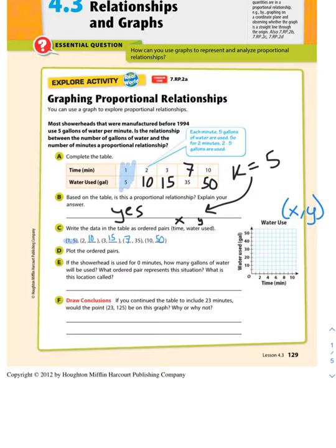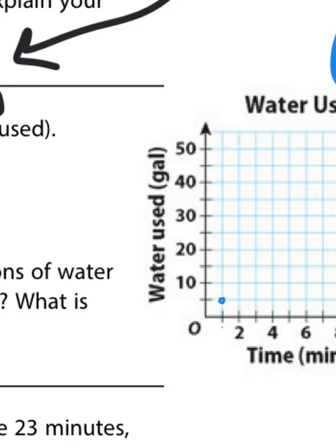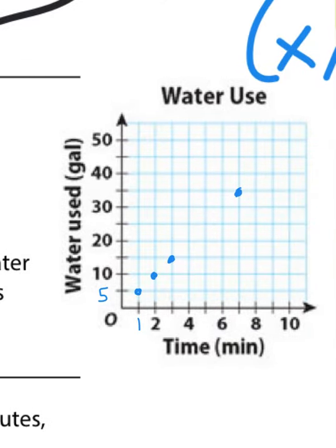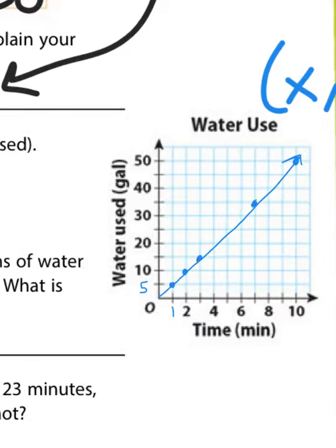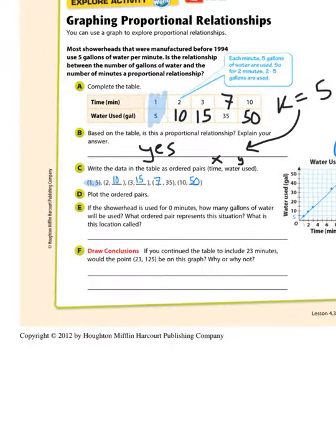So 1, 5 is going to be right here, over 1, up 5. Next one was at 2, 10, then we add 3, 15, 7, 35, and 10, 50. Let's connect those dots. Notice how a proportional relationship is graphed with a straight line. Because it's linear, we'll learn what that word means later in the year.